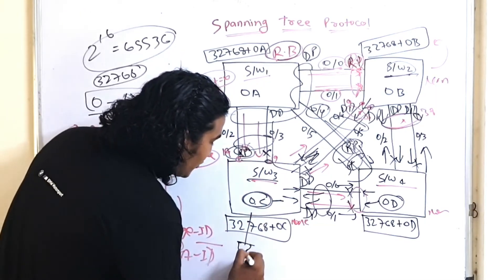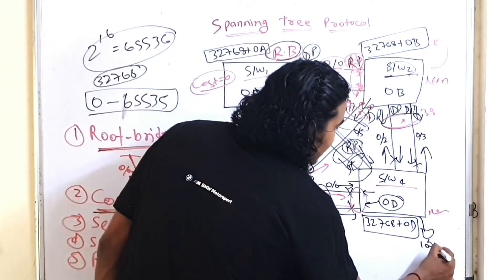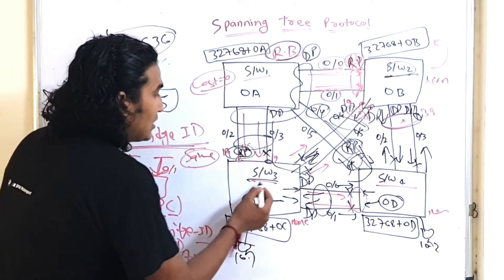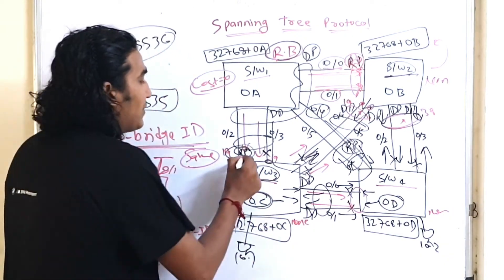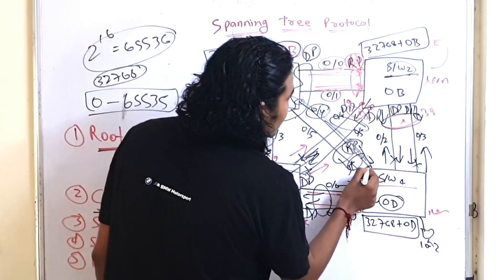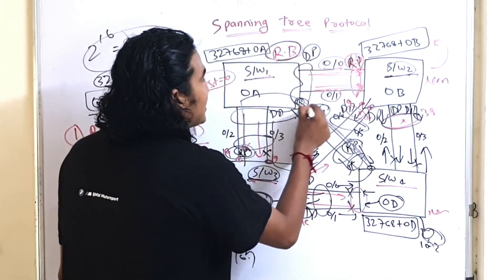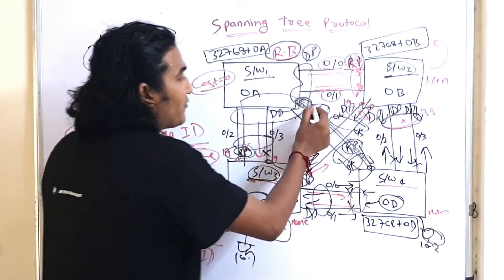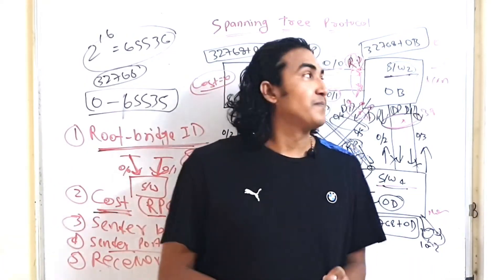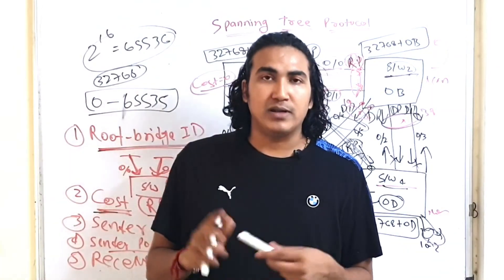Suppose one computer has IP 10.1 and another has IP 10.2. If 10.1 wants to communicate with 10.2, Switch 3 forwards traffic from its RP to the root bridge. The root bridge (Switch 1) forwards to Switch 4 via the DP, and Switch 4 delivers to the PC. This demonstrates the complete STP root bridge, root port, and designated port election.